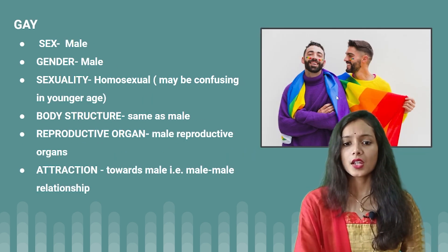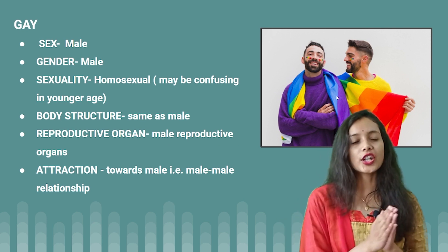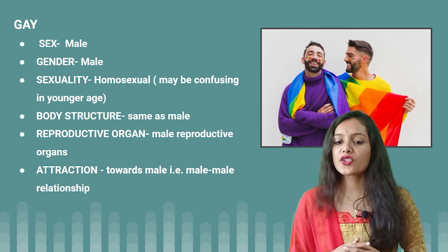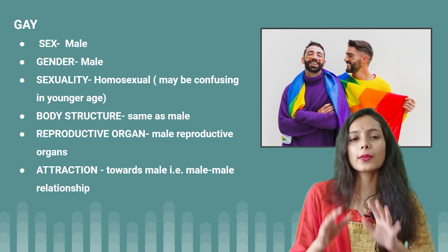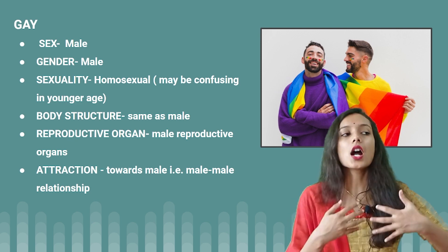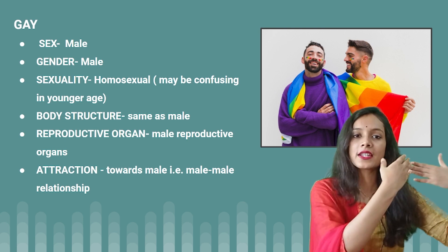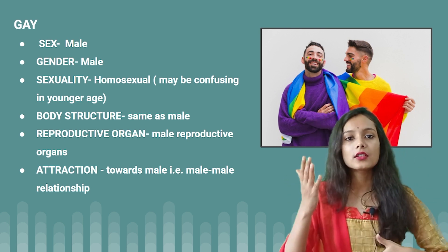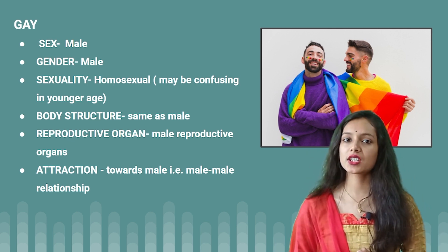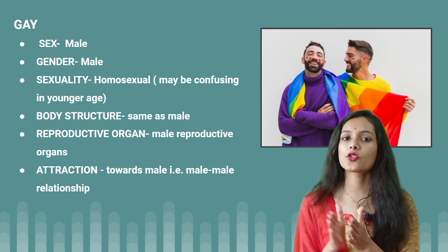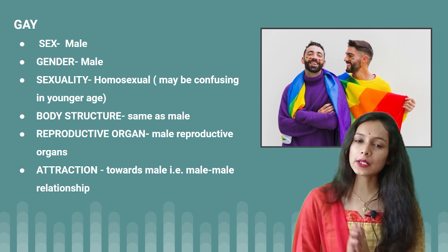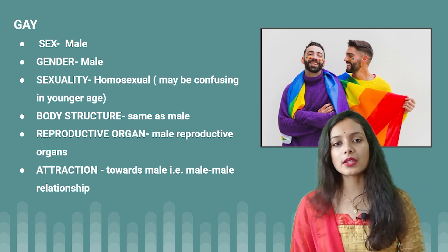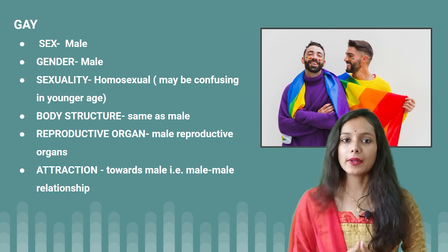Gay: sex is male, gender is male, and sexuality is homosexual. This may be confusing at a younger age, but no need to worry. If you are male and attracted towards male, it is very normal. Body structure is the same as heterosexual male, with male reproductive organs present. Attraction is male towards male — a male-male relationship.